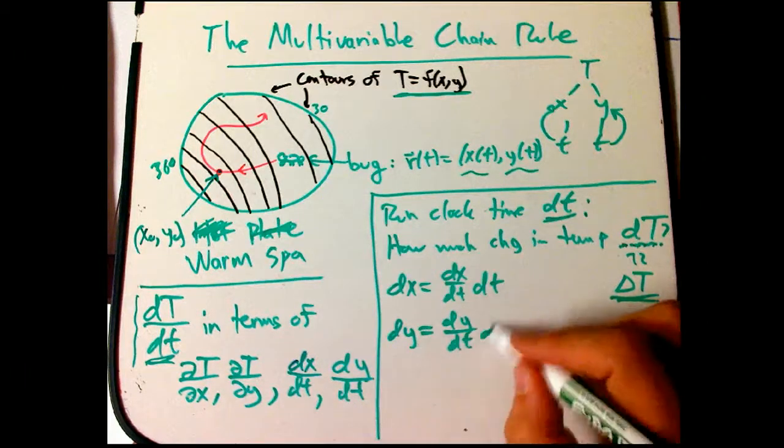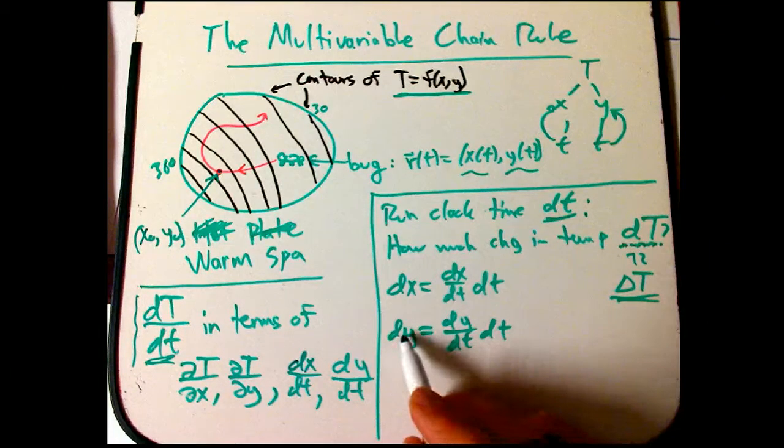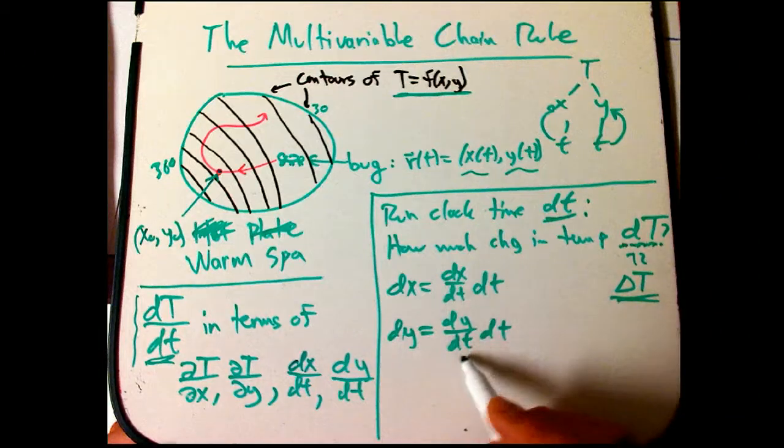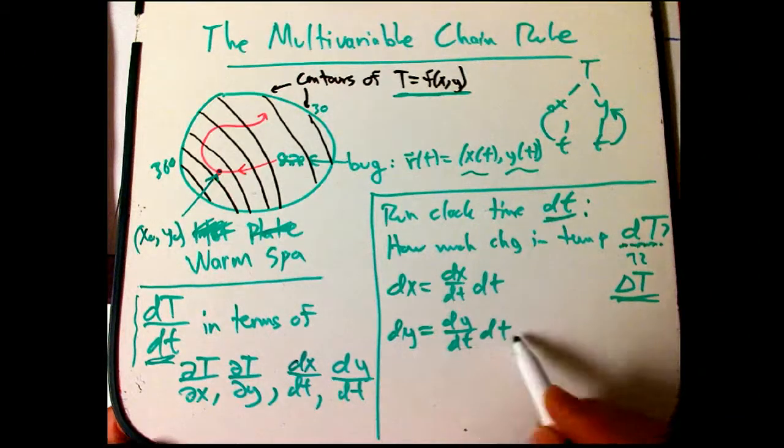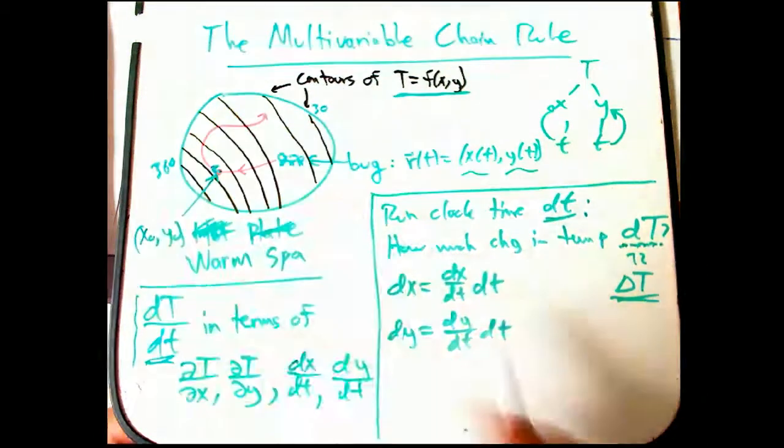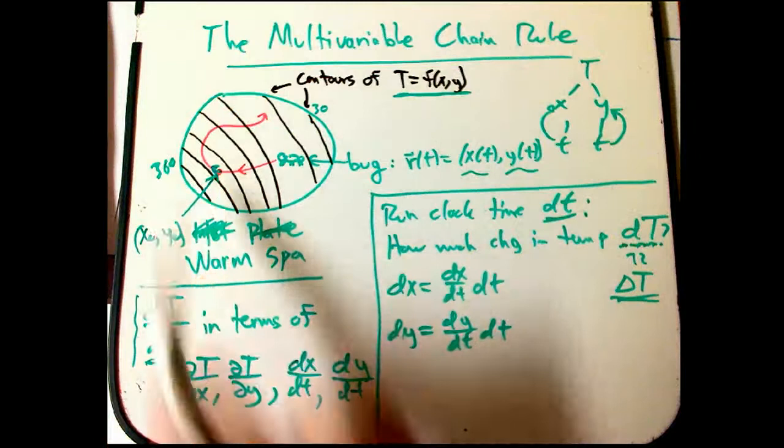Similarly, the change in y, at least to a very good approximation, that's engendered by running the clock by dt, is just the speed in the y variable, the velocity, times dt. So that's going to tell me, it's basically saying I'm moving along a little vector here, dx, dy.